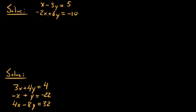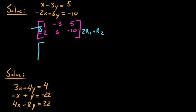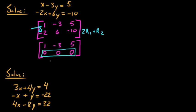Let's look at the top-right system. We write the augmented matrix: 1, negative 3, 5 in the first row and negative 2, 6, negative 10 in the second row. We already have a 1 in the top-left corner, so we take 2 times row 1 and add it to row 2. The result: the second row becomes all zeros — 0, 0, 0. This is a consistent dependent system. If we put variables back in, the second equation reads 0 equals 0, which is valid for all real numbers.